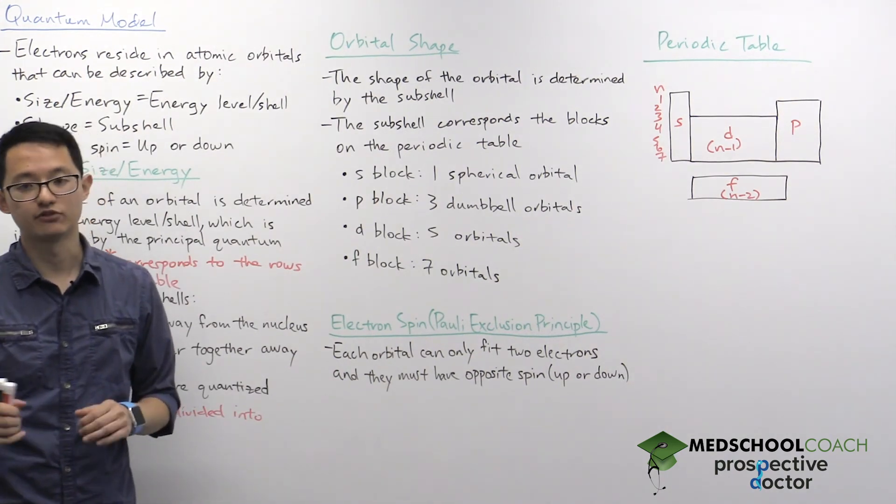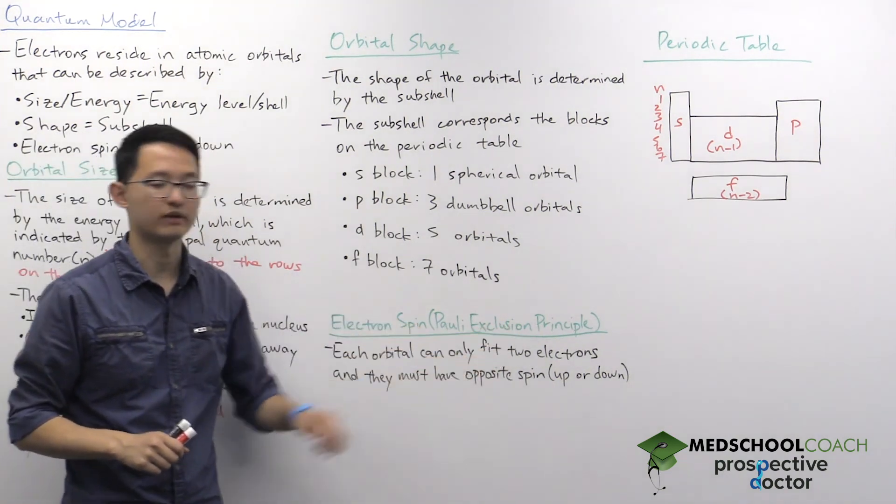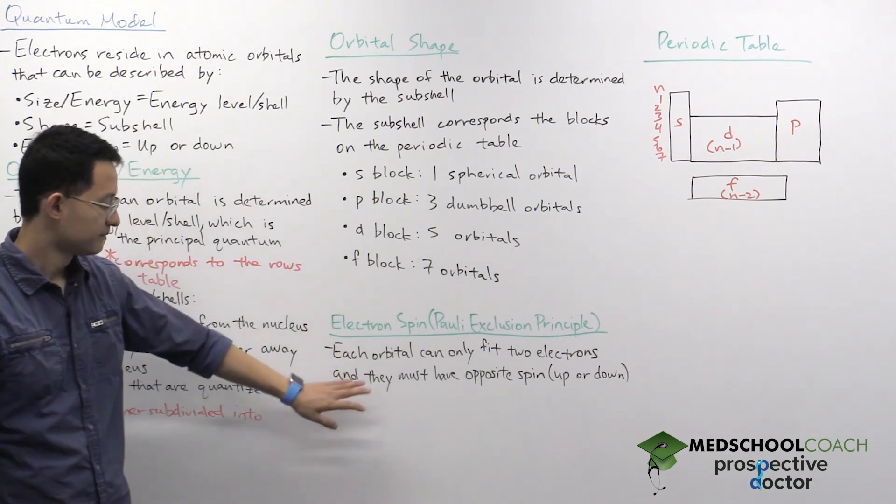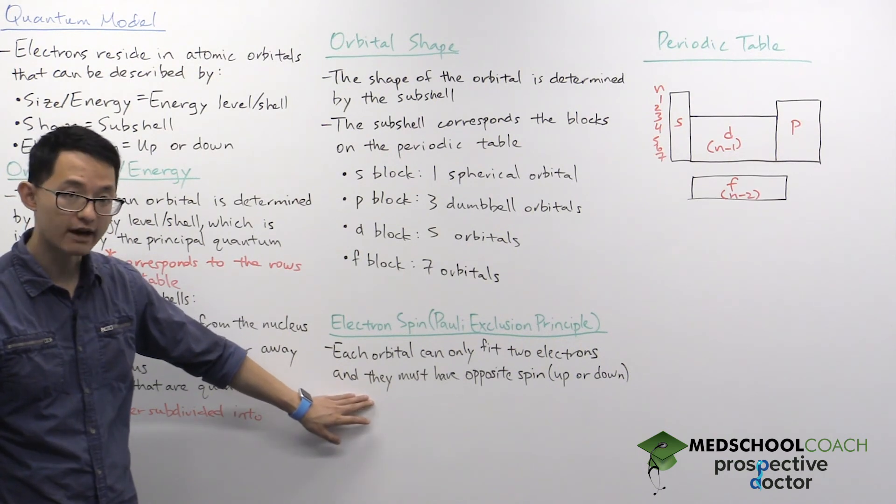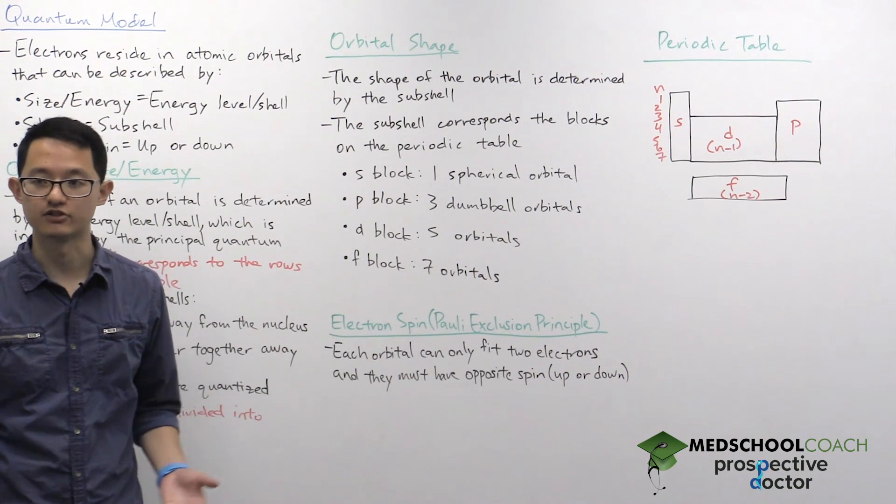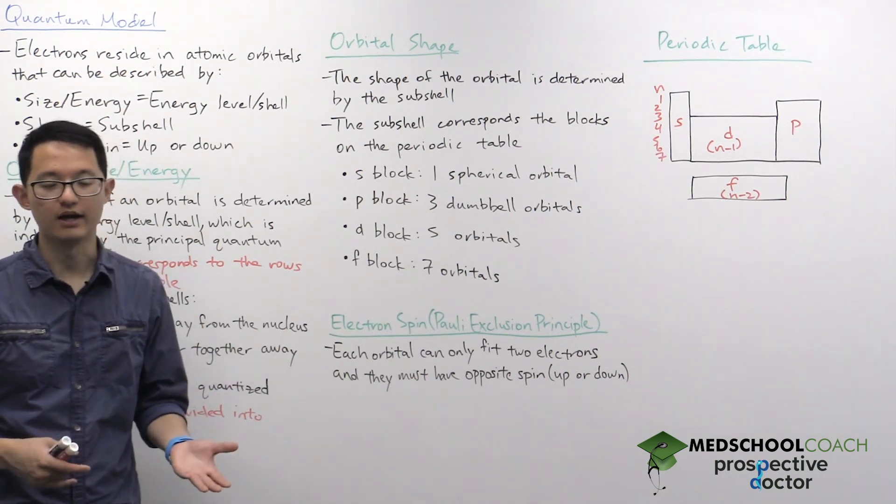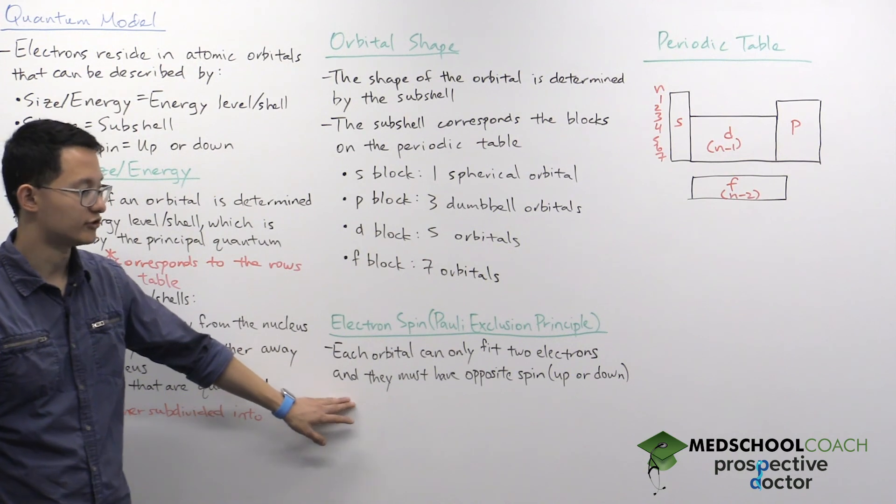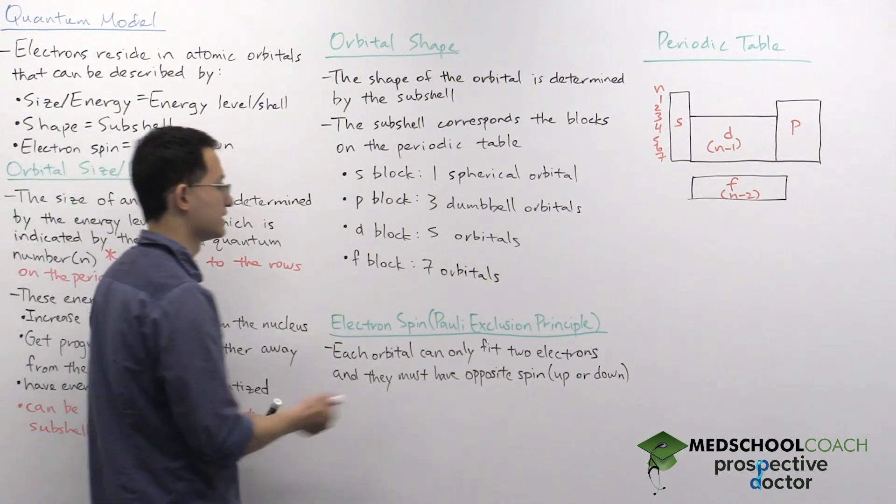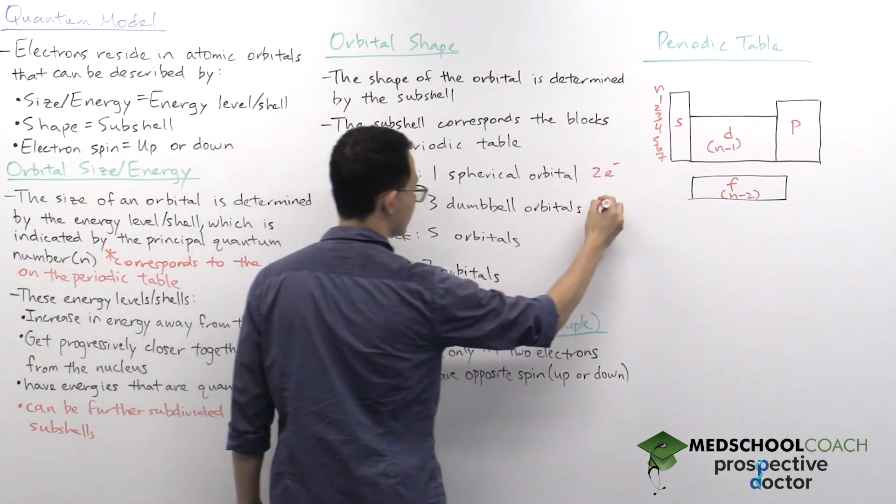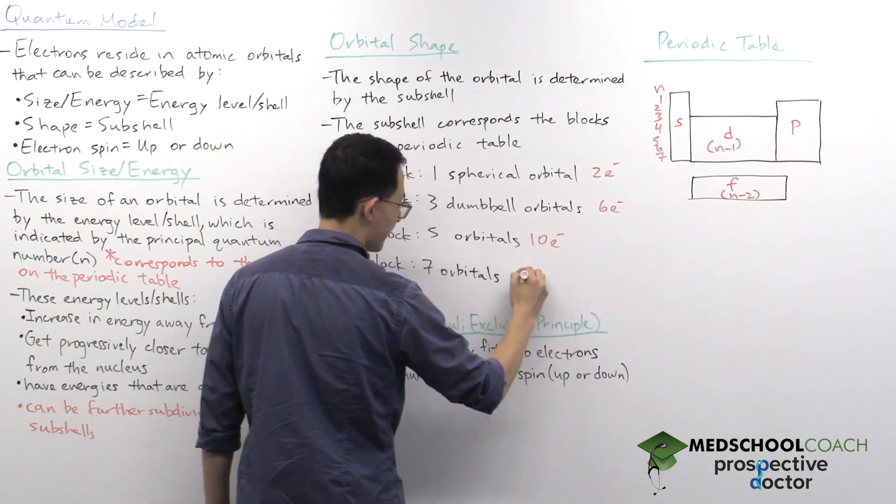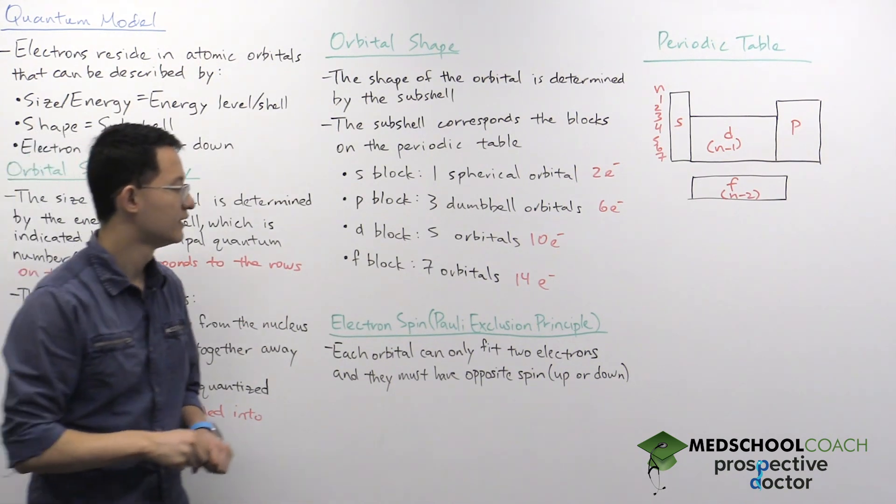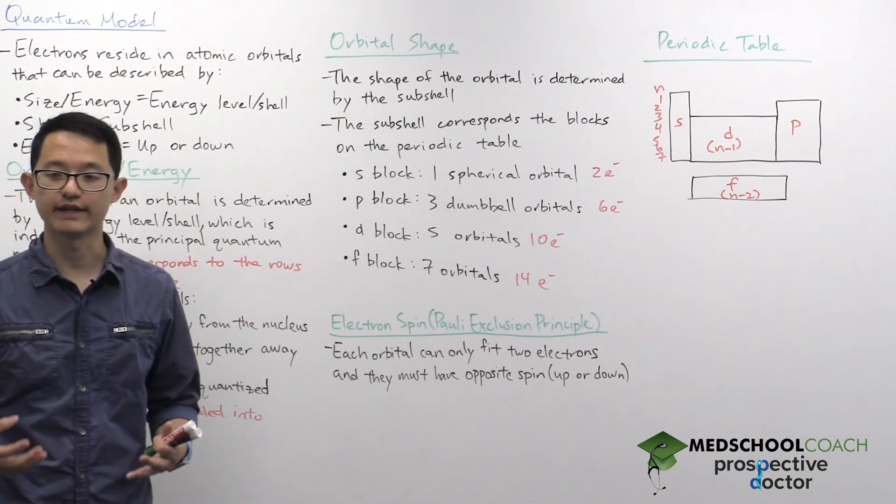Within each orbital, you can have two electrons. This is essentially the Pauli exclusion principle, and it's based on the possible spin values that electrons can have within orbitals. The electrons can have either an up spin or a down spin. You can't have an orbital with two up spins or two down spins—you have to have only an up or a down. Because of that, each orbital can only fit two electrons. As a result, in the S block you can have two electrons, in the P block you can have six electrons, the D block can have 10 electrons, and in the F block you can hold up to 14 electrons in that subshell. We'll talk about this more in detail when we look at our next video on electron configurations.